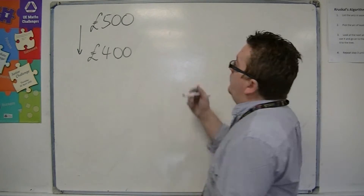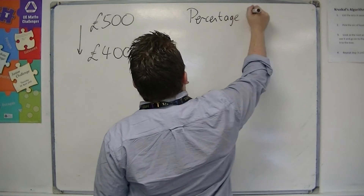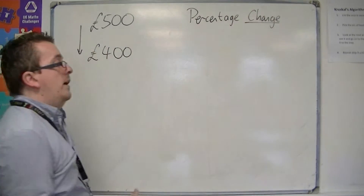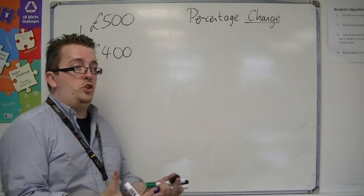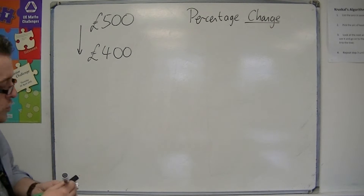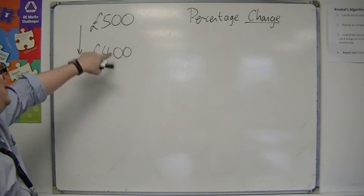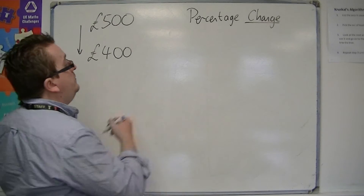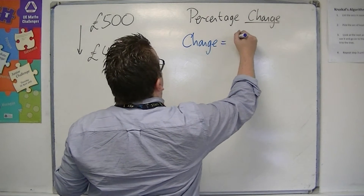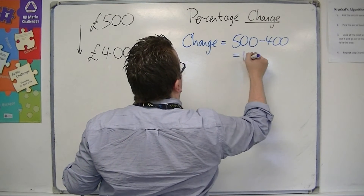When you're looking at percentage change, the key word is actually change — by how much has it changed? What you want to do is grab the larger of the two and take away the smaller. So we want to work out the change, which is £500 take away £400, which is £100.